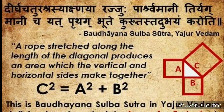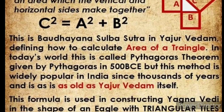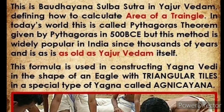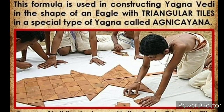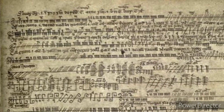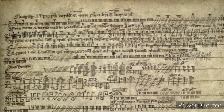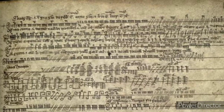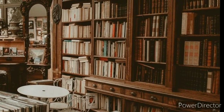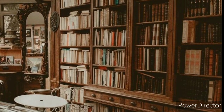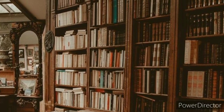The Bakshali manuscript, an arithmetic manual on merchants, records the symbol of zero as a dot-like structure with a hollow structure signifying void or nothing. These manuscripts were dated using radiocarbon dating, a method of determining the age of an object, in 2017. The ages were recorded as 224 to 383 AD, 680 to 779 AD, and 885 to 993 AD, marking the world's oldest records of the application of the symbol of zero.